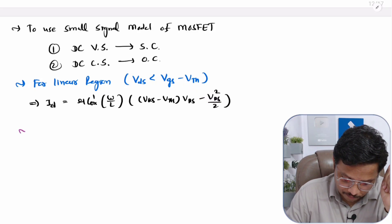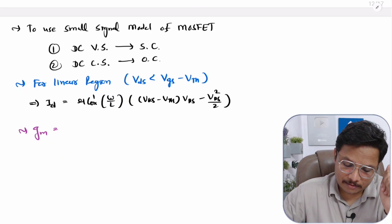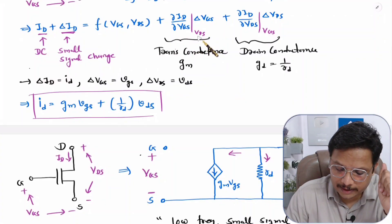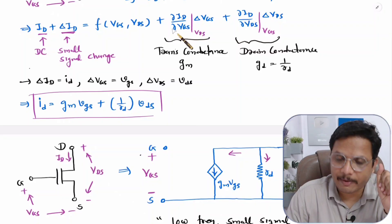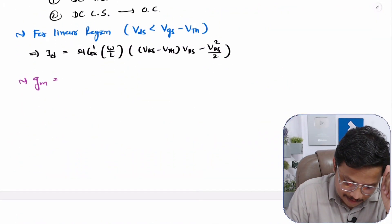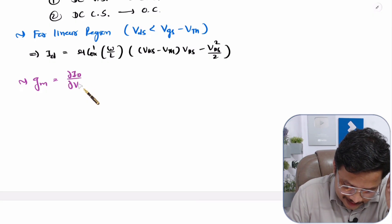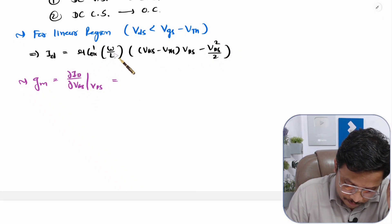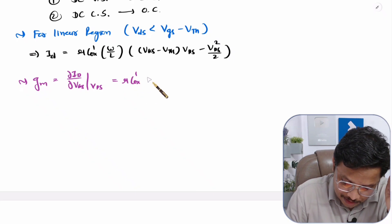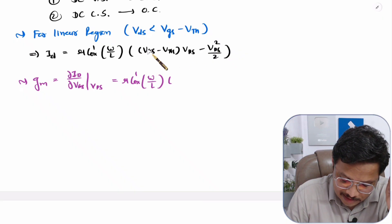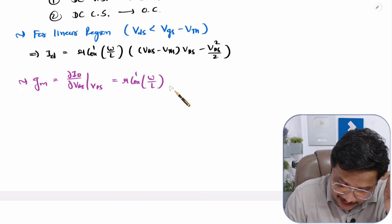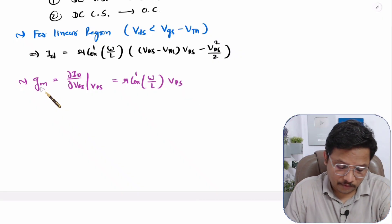For calculation of GM, the transconductance, we take the partial differentiation of ID with respect to VGS, keeping VDS constant. Differentiating the drain current equation: μCOX' × (W/L) is constant, and differentiating with respect to VGS gives 1 × VDS for the first term, and 0 for the VDS² term. So GM = μCOX' × (W/L) × VDS. This is the transconductance for the linear region.